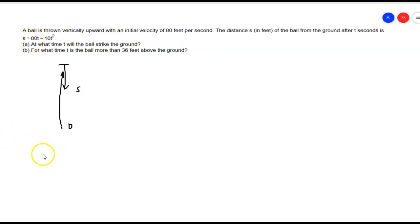If we take a look at the problem here, I'm going to replace s with 0, and I'm going to get 0 equals 80t minus 16t squared. At this point, I can factor out...